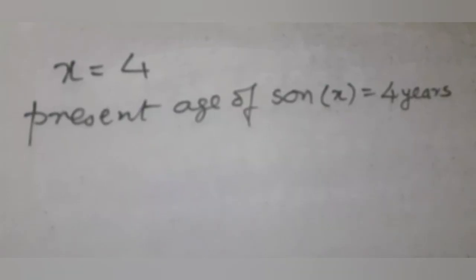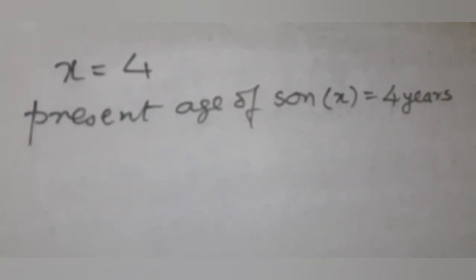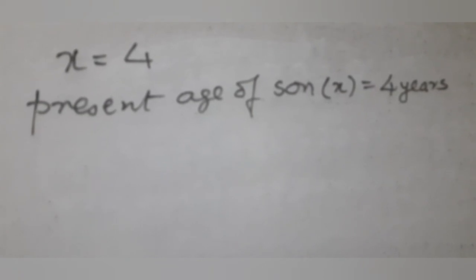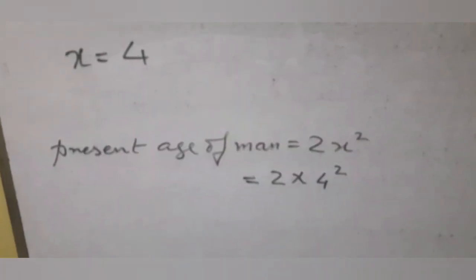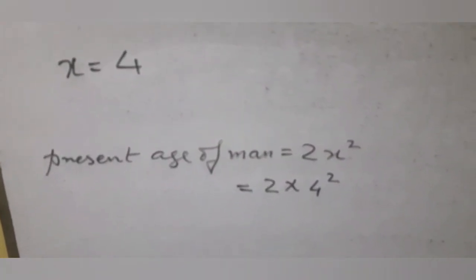So, present age of the son is 4 years. Present age of the man is 2 times x square, that is 2 times 4 square, or 32 years.